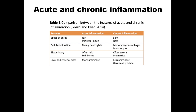Acute inflammation is the early, almost immediate response of a tissue to injury. It is non-specific and may be evoked by any injury short of one that is immediately lethal. Chronic inflammation may have a rapid or slow onset, but is characterized by its persistence and lack of clear resolution. It occurs when the tissues are unable to overcome the effects of the injuring agent.